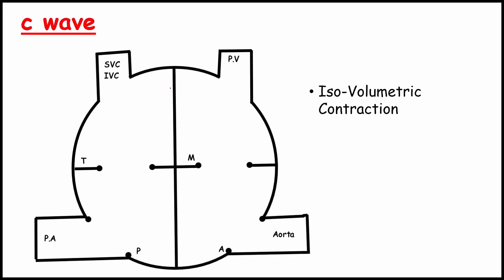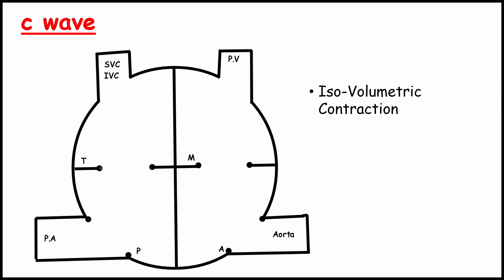Next comes C wave. It happens in isovolumetric contraction. During that, tricuspid and pulmonary valve in closed position and the ventricle starts to contract. So the pressure in the ventricle becomes increased. This causes tricuspid valve to push the blood upward and become bulged, which leads to C wave.